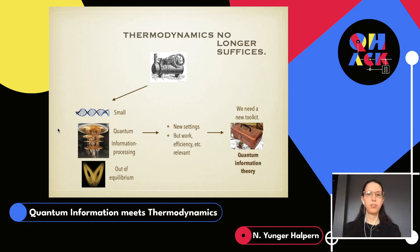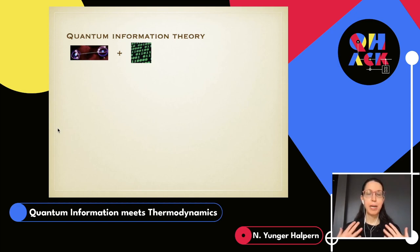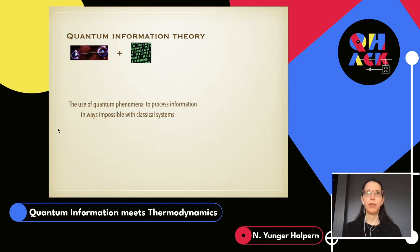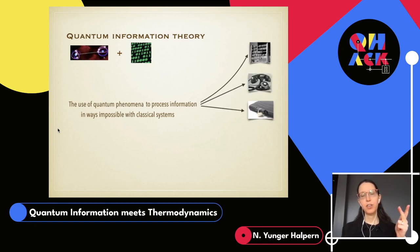Quantum information theory forms such a toolkit. To me, quantum information theory is the study of how we can use quantum physics to process information in ways we can't if we have only classical systems. It's also the understanding of quantum systems through how they store and process information — solving computational problems, communicating information, securing information cryptographically, and storing information in memories.